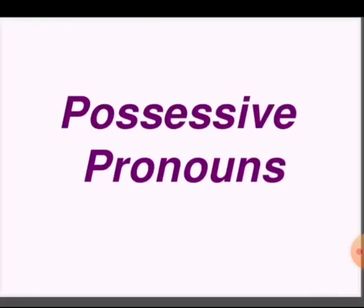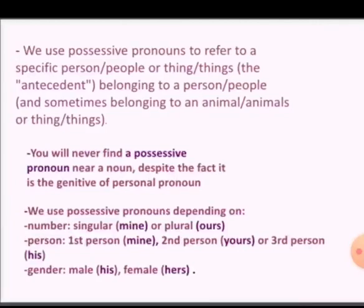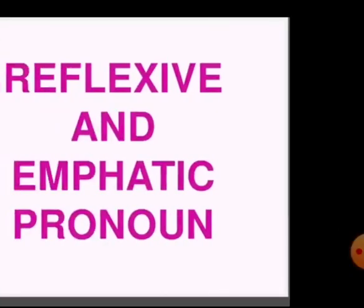Second is possessive pronouns. We use possessive pronouns to refer to a specific person, people, or thing belonging to a person or people. You will never find a possessive pronoun near a noun, despite the fact that it is derivative of a personal pronoun. We use possessive pronouns depending upon number and person, like mine, ours, yours, his, hers.